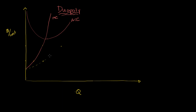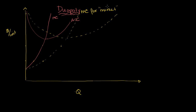So the market marginal cost curve — shown here in yellow — looks like that. That is the marginal cost for the market, where the market in this example is both firms. The same logic applies to the average total cost curve. Two firms together can provide twice the quantity at a given average total cost, so the market's average total cost curve is going to be twice as fat as the one for a single firm.